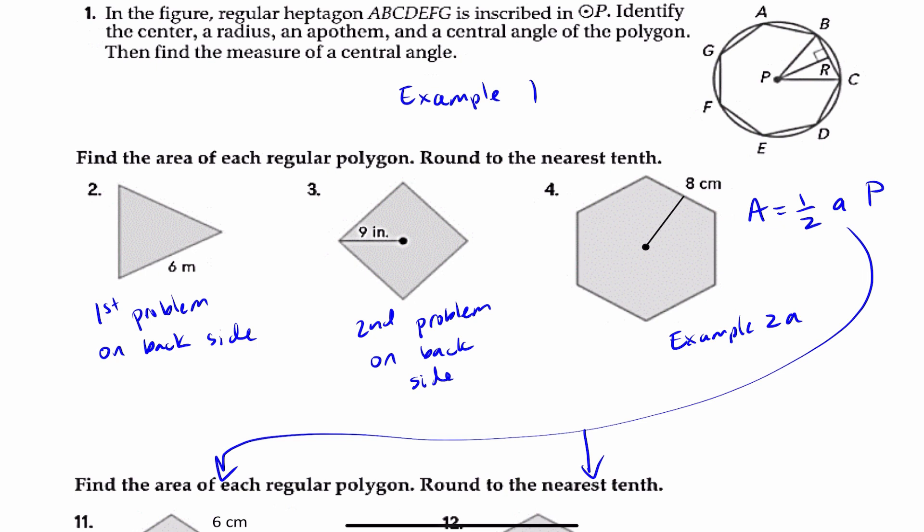And then number four is very similar to the problem on the front page, example 2A. For this type of problem here, you're going to be applying the area of a regular polygon formula, the generic one. It's one-half the apothem multiplied by the perimeter. For these two things, they do have their specific formulas. This one is an equilateral triangle, and this one's a square.